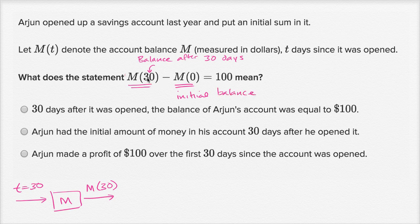So what they're doing, they're taking our balance after 30 days, and from that they're subtracting the initial balance, and they're saying that that's equal to 100. You could say that your balance after 30 days is $100 more than the initial balance. Or another way to think about it is, you've added $100 in the first 30 days. Now let's see which of these choices are consistent with that.